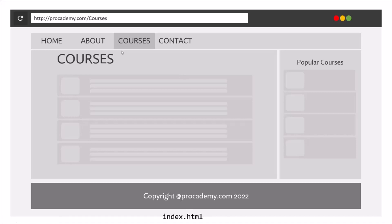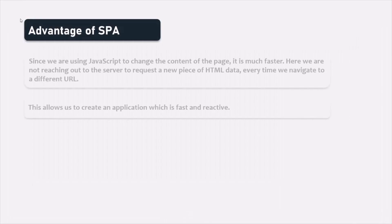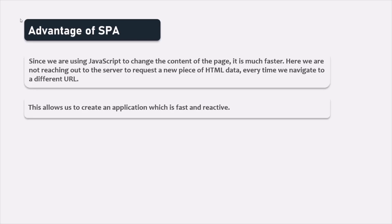Since we are not making requests to the server each time we request a new resource, you will never see the refresh icon spin. JavaScript is simply changing the content based on the resource requested. What is the advantage of using a single-page application? Since we use JavaScript to change the content, loading new HTML content is much faster because we are not reaching out to the server to request a new piece of HTML every time we navigate to a different URL. This approach allows us to create applications that are very fast and reactive, just like a mobile application. If you need some data from the server, you can load it in the background without making the page unresponsive, and once loaded, display it in your application.